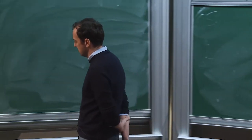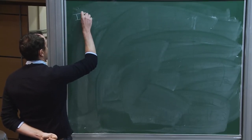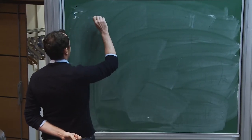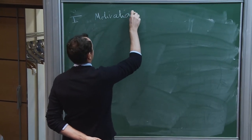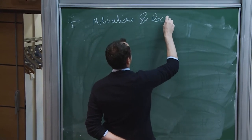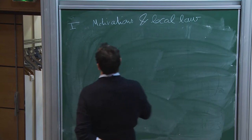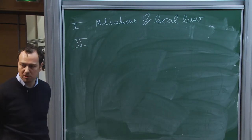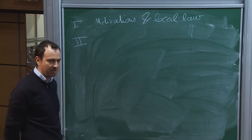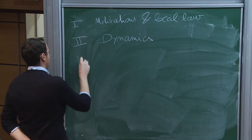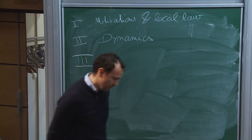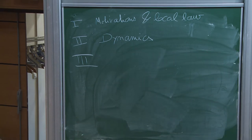My plan for these lectures is today to talk about some motivations and the so-called local law. Tomorrow we will introduce Dyson-Brownian motion and let's call it just dynamics because we will also look a bit at eigenvectors. And the last lecture will be about how you may want to combine information about eigenvalues and eigenvectors in terms of universality to prove things about models which are not mean-field.